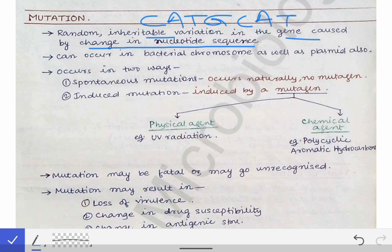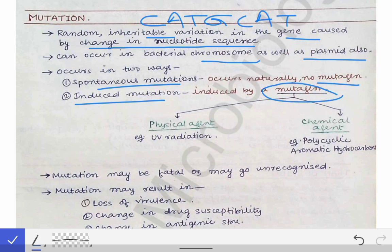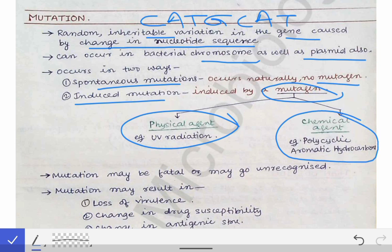Mutations can occur in bacterial chromosomes as well as in plasmids. Mutation can occur in two ways: spontaneous mutation, which occurs naturally without any mutagens, and induced mutation, which is caused by mutagens. Physical mutagens include UV radiation, and chemical mutagens include polycyclic aromatic hydrocarbons and other similar compounds.